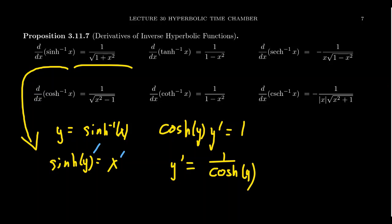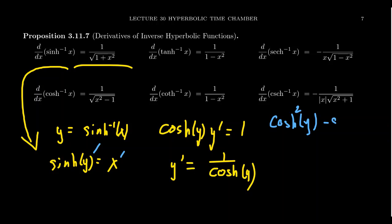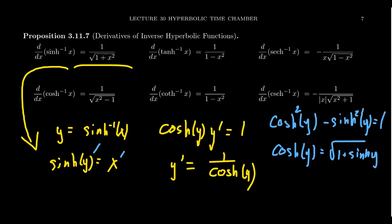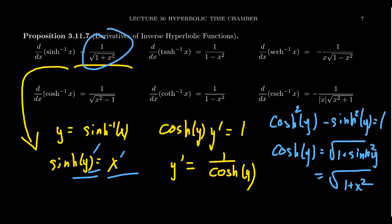How do we relate that to the original expression? Notice that sinh of y equals x. You can play around with the Pythagorean relationship for sinh and cosh. If you take cosh squared of y minus sinh squared of y, this is equal to 1. Solving for cosh, you get cosh of y is equal to the square root of 1 plus sinh squared of y. This is advantageous because sinh of y is equal to x, so cosh of y equals the square root of 1 plus x squared. Therefore, the derivative of inverse sinh is 1 over the square root of 1 plus x squared.